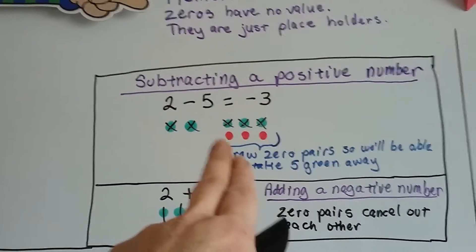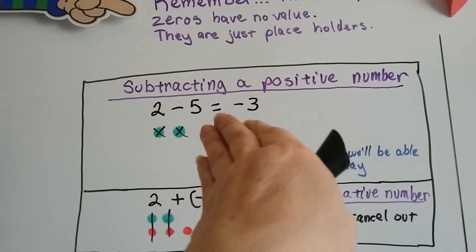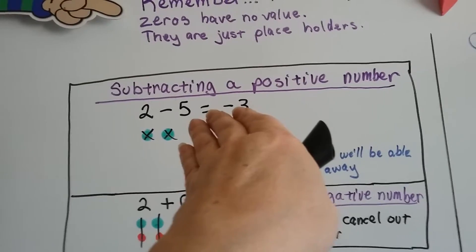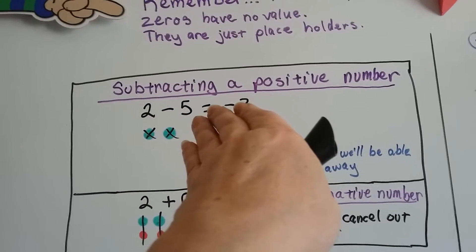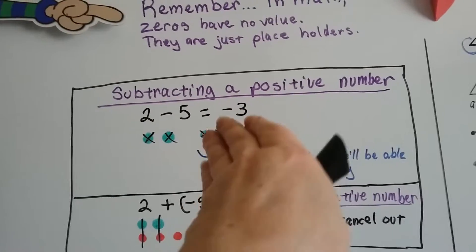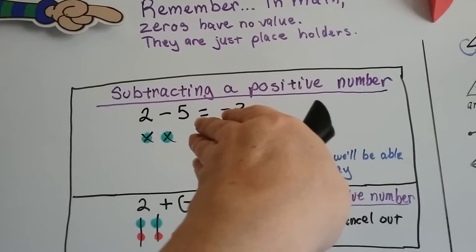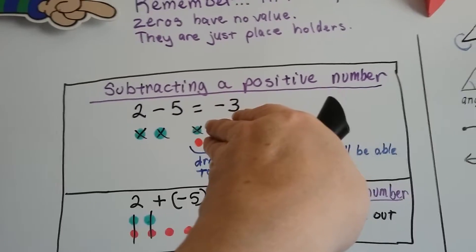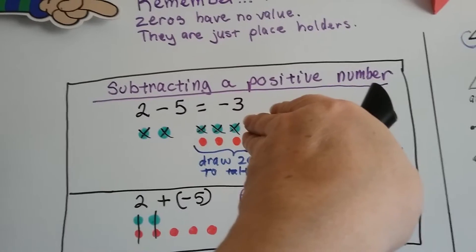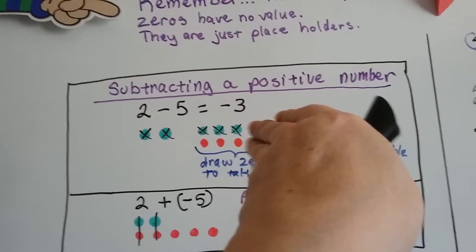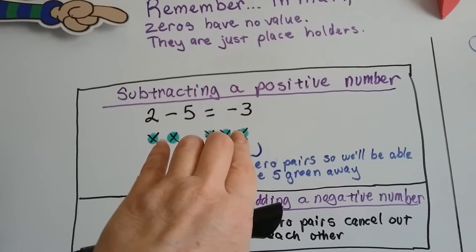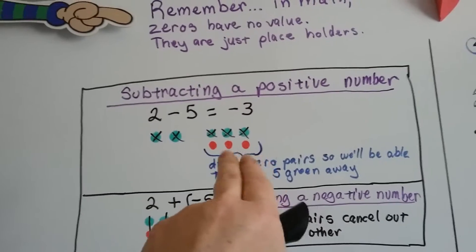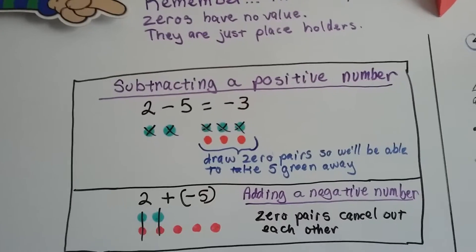Using green and red chips: you had 2 green chips and needed to take 5 away, but we didn't have it. So we make zero pairs — a green one and a red one paired together — until we have enough to take the 5 away. Then we take the 5 green ones away, and it leaves behind 3 red negative ones, meaning we have negative 3.